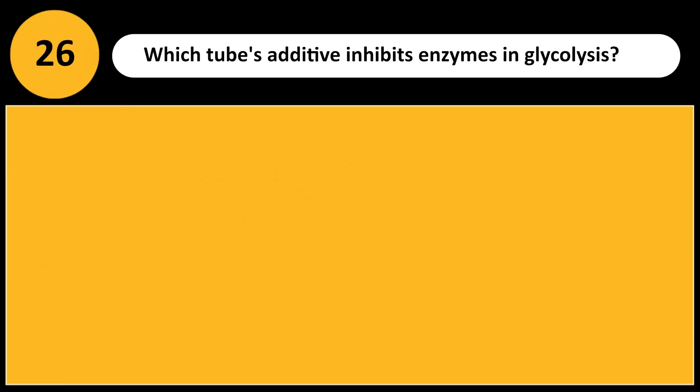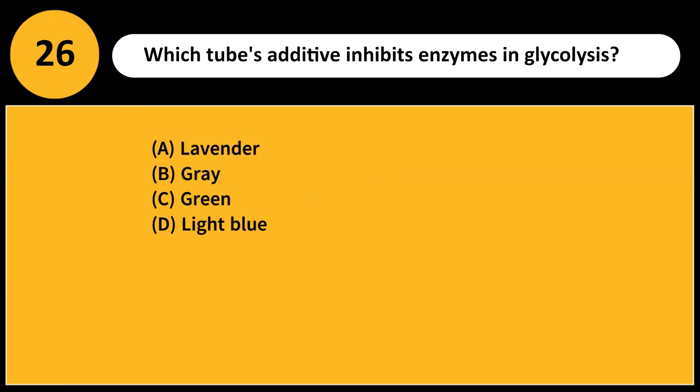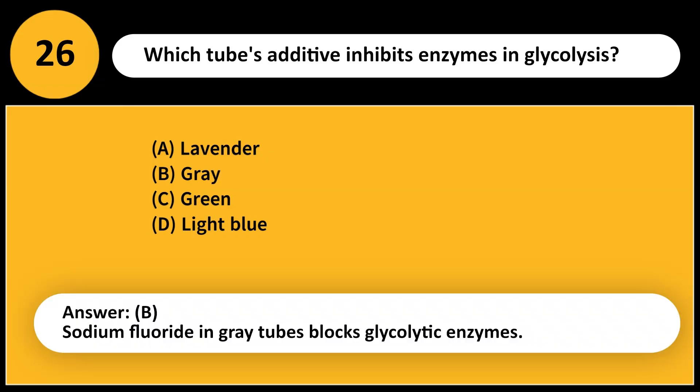Which tube's additive inhibits enzymes and glycolysis? A. Lavender. B. Gray. C. Green. D. Light blue. Answer: B. Sodium fluoride in gray tubes blocks glycolytic enzymes.